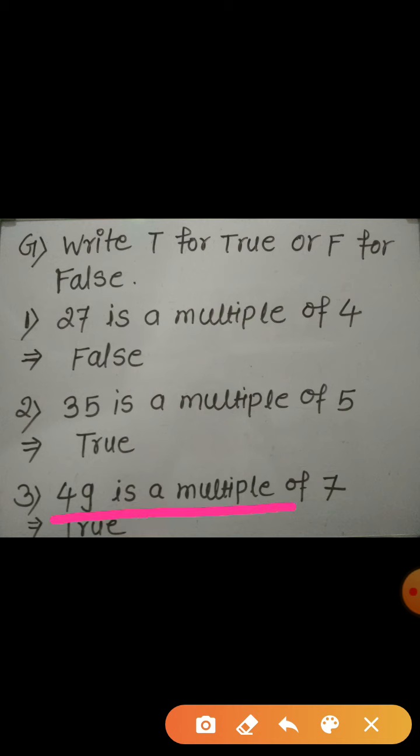Third one, 49 is a multiple of 7. Yes, it is also true. As we know that 7, 7's are 49. 49 comes in the table of 7. It means 49 is a multiple of 7.